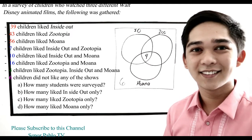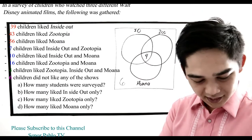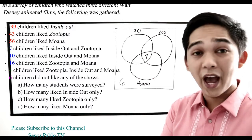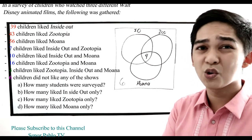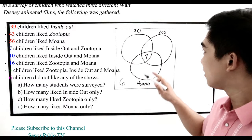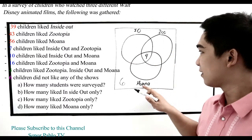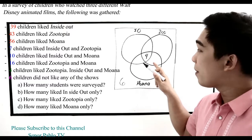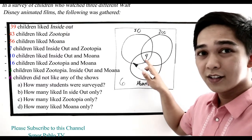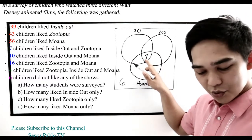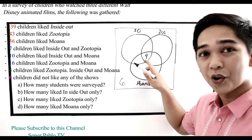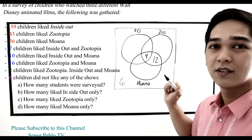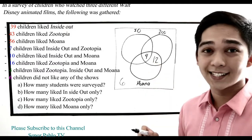Next, 16 children like Zootopia and Moana. Since we already have 4 in the center intersection, we subtract: 16 minus 4 equals 12. So we write 12 in the intersection of Zootopia and Moana only. Then, 10 children like Inside Out and Moana. We subtract the center 4: 10 minus 4 equals 6. So we write 6 in the intersection of Inside Out and Moana only.